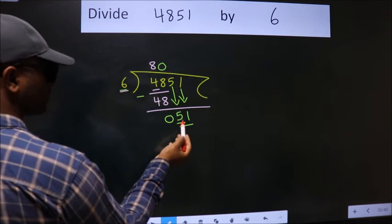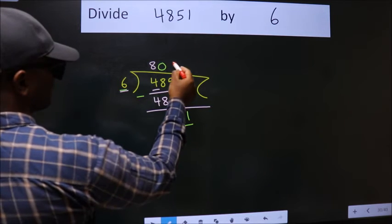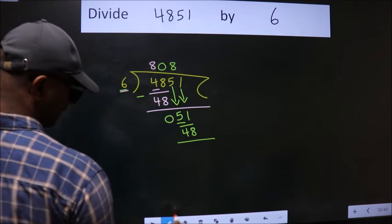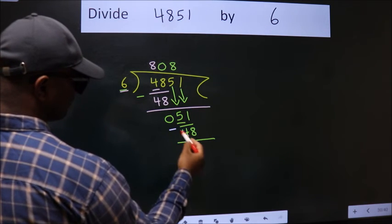A number close to 51 in 6 table is 6 times 8 is 48. Now we subtract. We get 3.